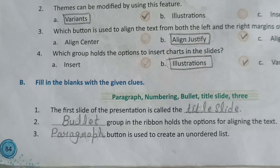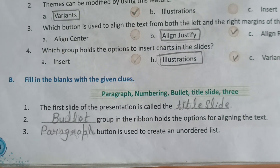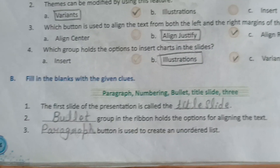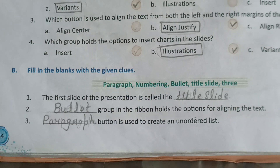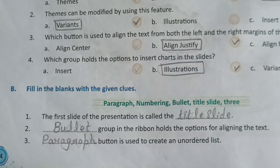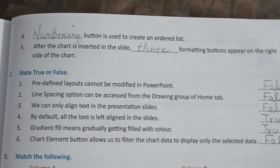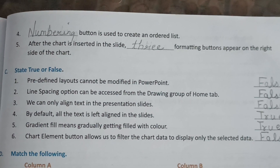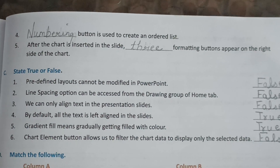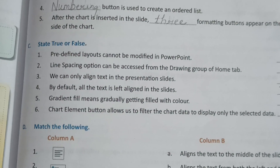Now let's begin with Part B — Fill in the Blanks. Number one: The first slide of the presentation is called the Title Slide. Number two: The Bullet group in the ribbon holds the options for aligning the text. Number three: Paragraph button is used to create an unordered list. Number four: Numbering button is used to create an ordered list. Number five: After the chart is inserted in the slide, three formatting buttons appear on the right side of the chart.